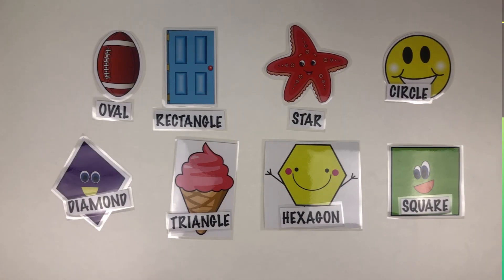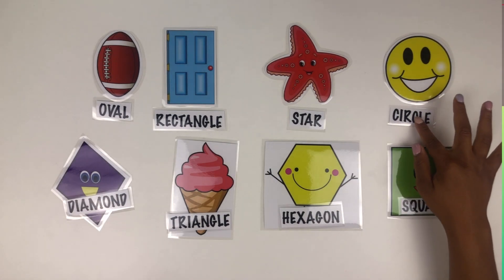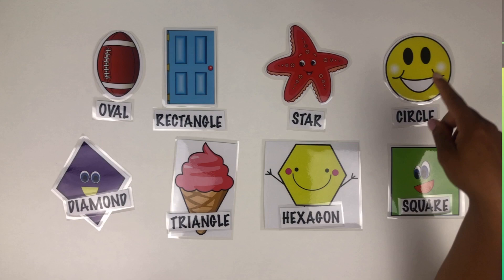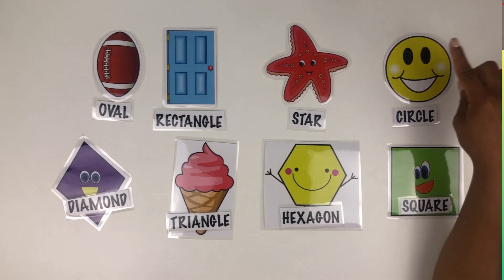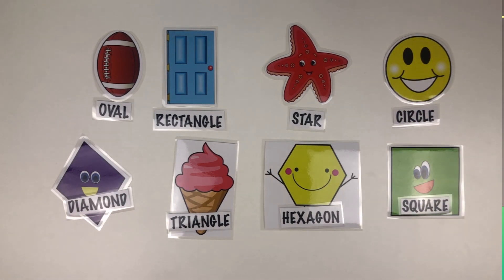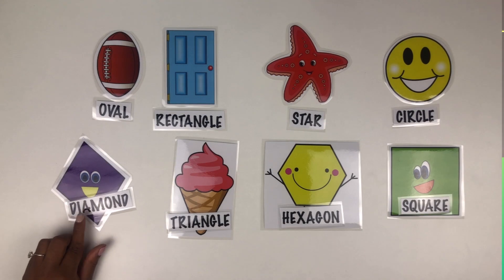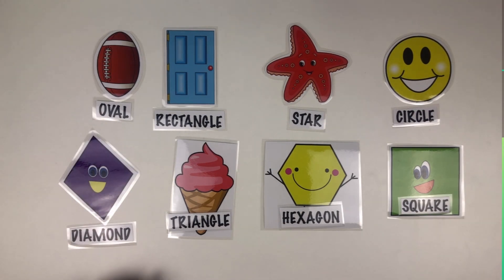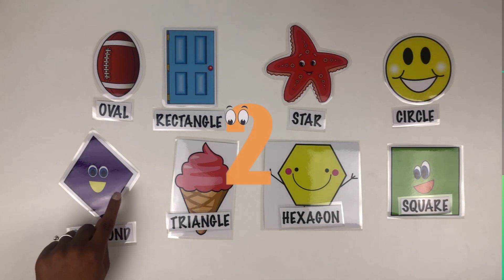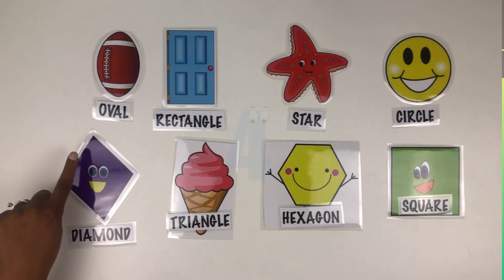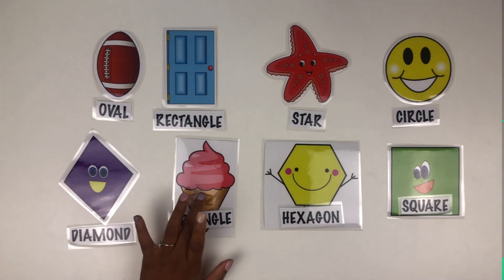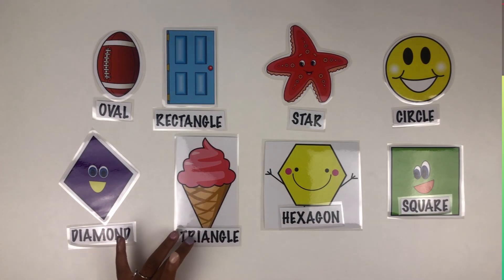How about a circle? How many sides does a circle have? Zero sides. How many sides does a diamond have? Let's count: one, two, three, four. Good, a diamond has four sides.